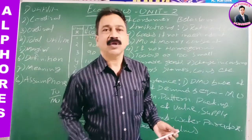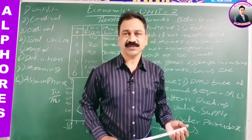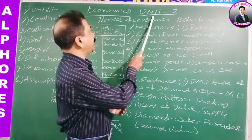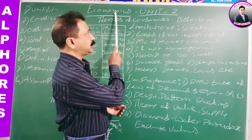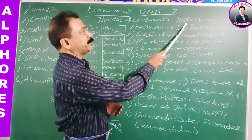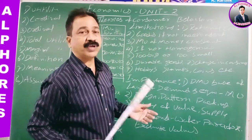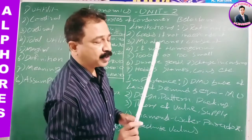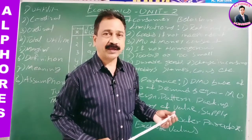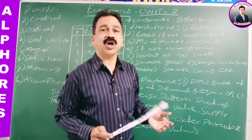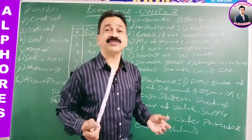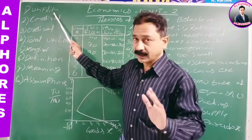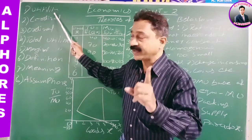Good morning students. Welcome to Alphos e-learning classes. Today we are discussing the second unit of economics first year, theories of consumer behavior. We have seen already the law of diminishing marginal utility in two parts. Today we are going to conclude that law of diminishing marginal utility. So we have seen all these things from the beginning in this chapter — it is a recap, and I will explain you again.